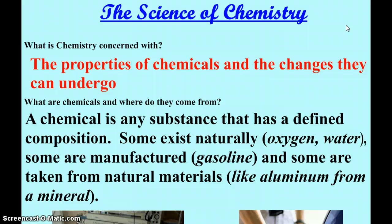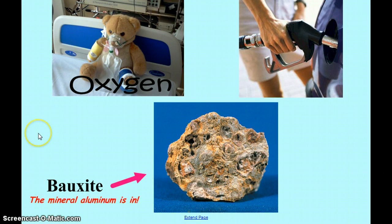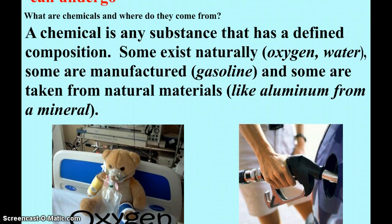And some are taken from natural materials. For example, aluminum comes from a mineral. A lot of our elements are found in minerals. And for aluminum, bauxite, that's the mineral that aluminum is found in. So oxygen, gasoline, aluminum, all of those are chemicals. And they have either found naturally manufactured or taken from other natural materials.